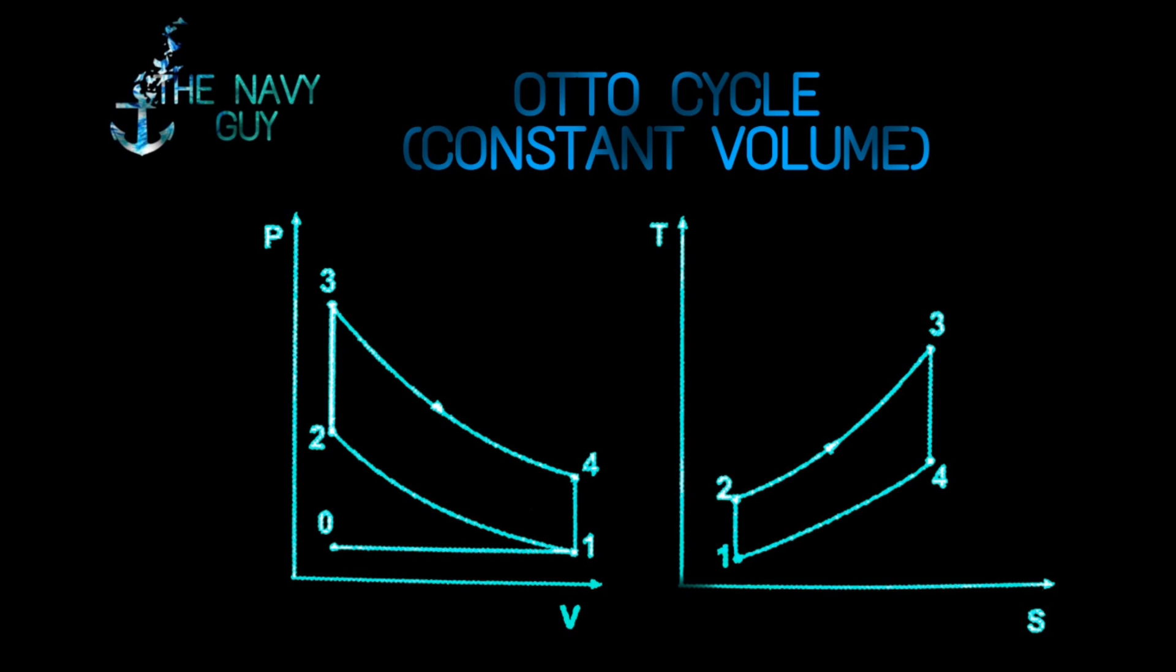From 0 to 1, charging of fresh air takes place. From 1 to 2, air is compressed isentropically, that is at constant entropy. From 2 to 3, heat is added at constant volume. That is why it is called constant volume cycle.